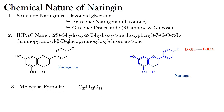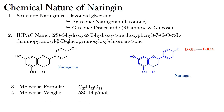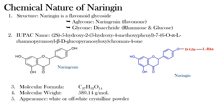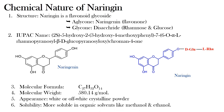If we talk about the molecular formula, the molecular formula of Naringenin is C27H32O14 and the molecular weight is 580.14. If we talk about the appearance, Naringenin is a white or off-white crystalline powder, and it is more soluble in organic solvents like methanol and ethanol.